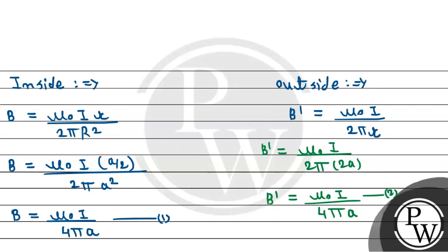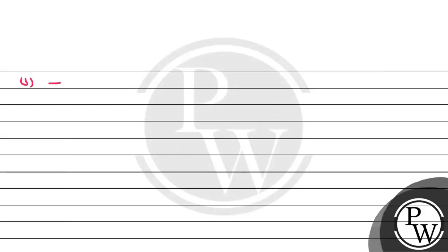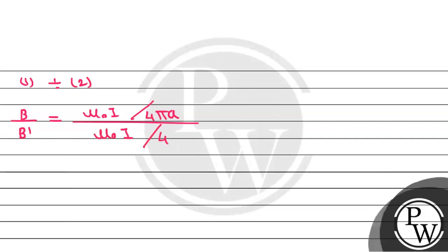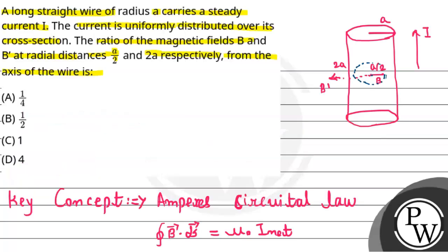We have to calculate the ratio, so dividing equation one by equation two, we get the required ratio B by B' equals mu-naught I divided by 4 pi A, divided by mu-naught I divided by 4 pi A. Since both are equal, the ratio B by B' is simply equal to 1. Therefore option C is correct. I hope you understand. Thank you.